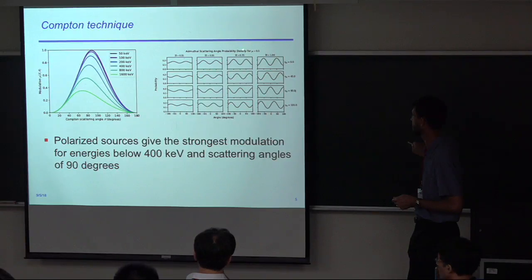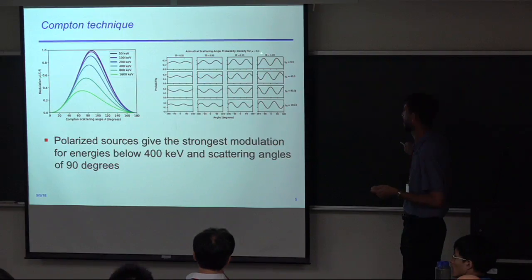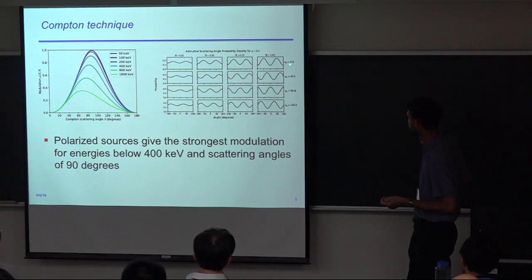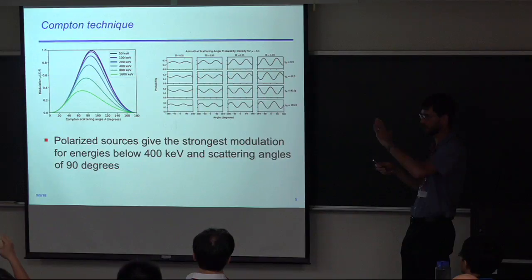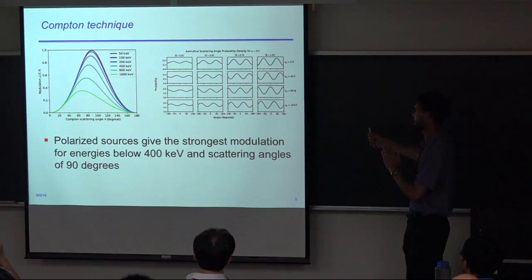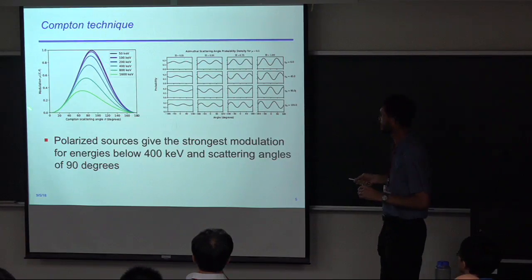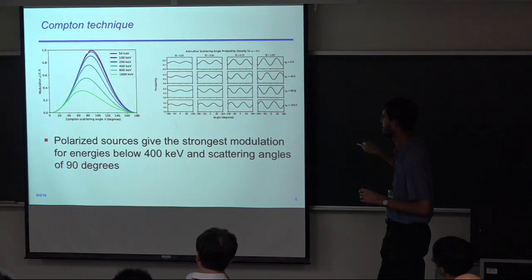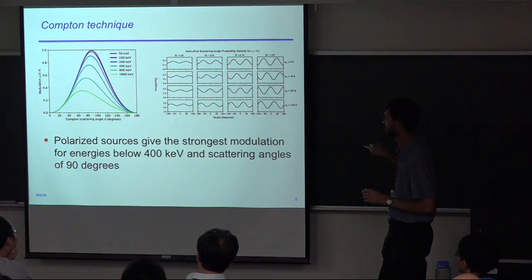For different angles of polarization, the modulation curve just shifts back and forth. For the best Compton polarimeter, you want to be able to measure events that scatter at 90 degrees — that's when you have the strongest modulation and the most sensitive Compton polarimeter. Below 400 keV and at 90 degrees gives optimal sensitivity. At higher energies the peak shifts to slightly lower angles — slightly forward scattering.